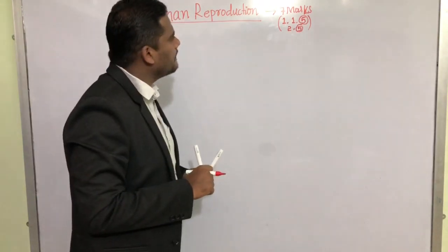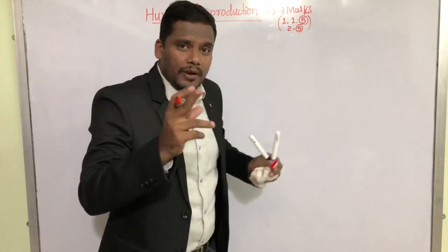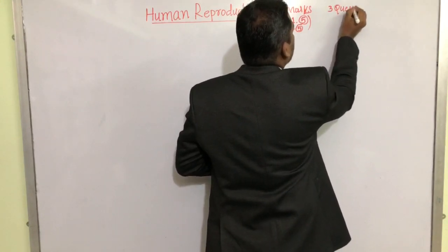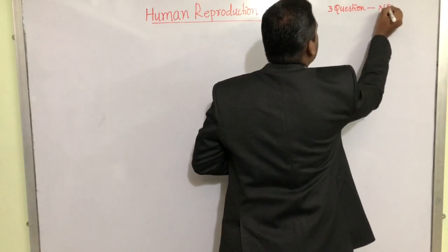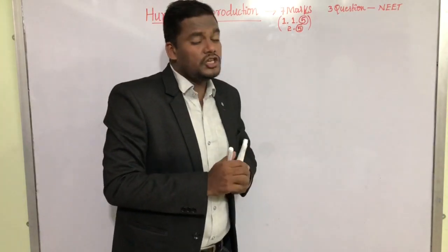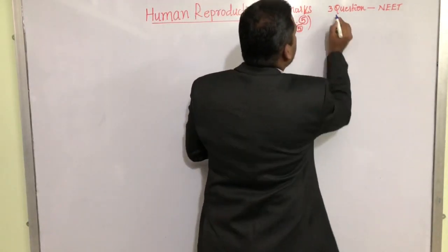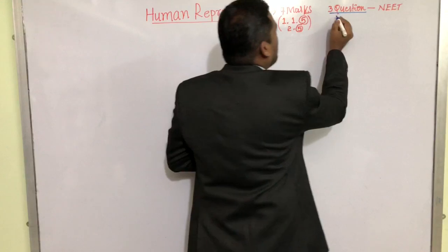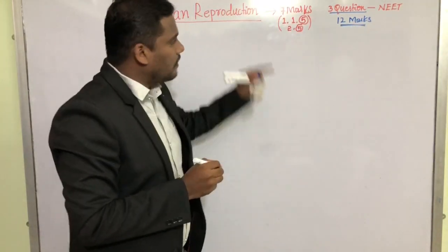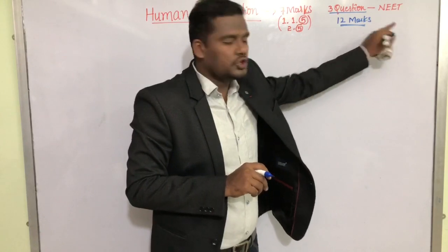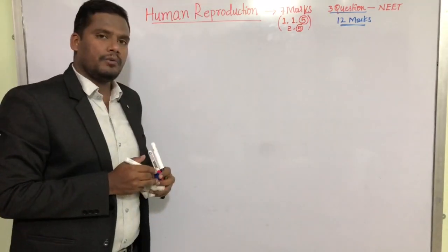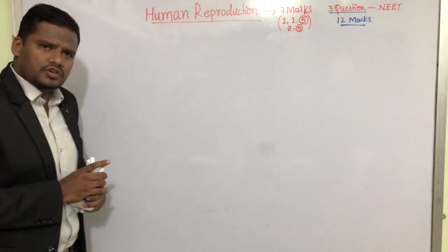As far as competitive exams are concerned, total three questions will be there in your NEET question paper. In NEET, each question carries four marks, so we will get three questions from this chapter — approximately 12 marks from this chapter in your NEET examinations. This is a very important chapter for second year biology syllabus as well as for competitive exams.